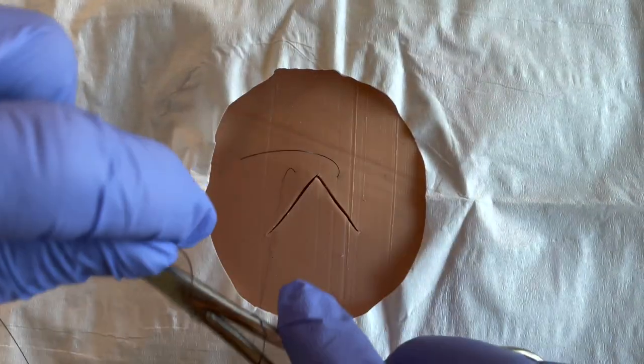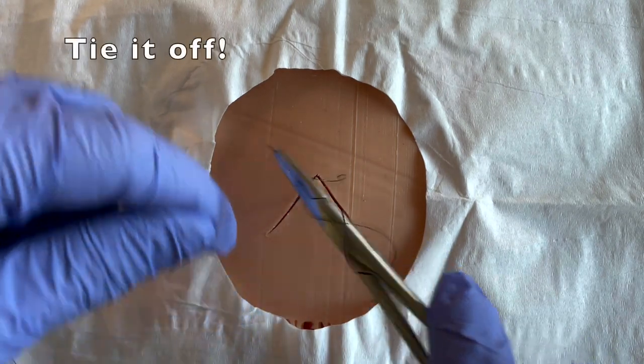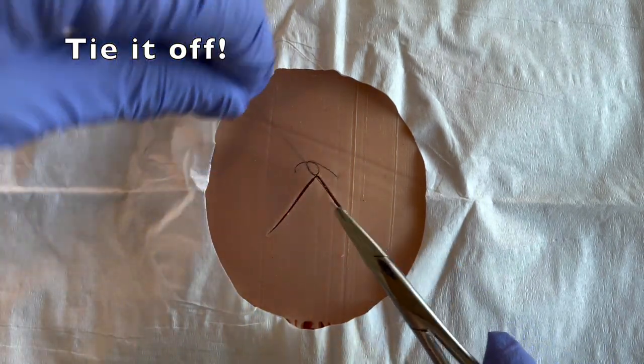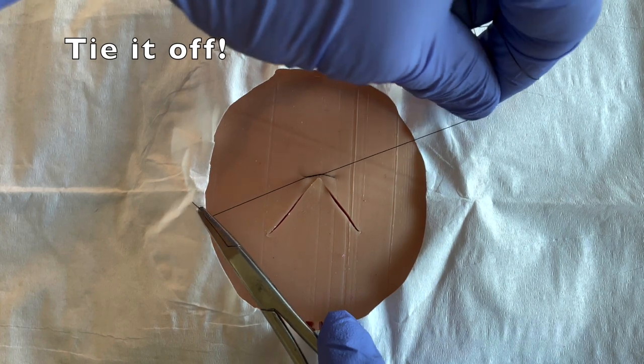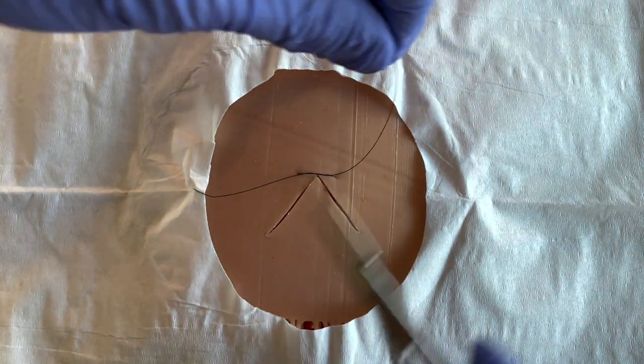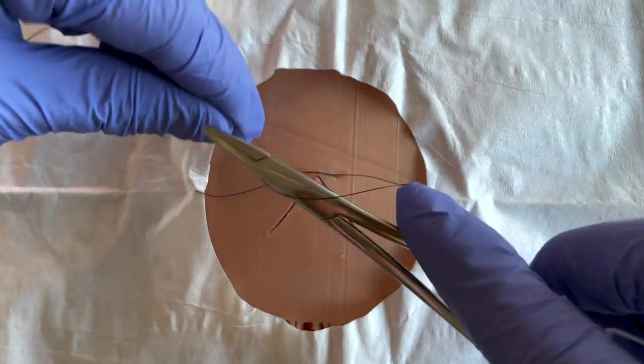So when it's time to tie it off, we'll bring this together nice and evenly and bring that flap edge together in order to approximate your margins.